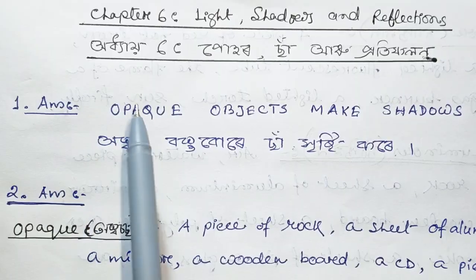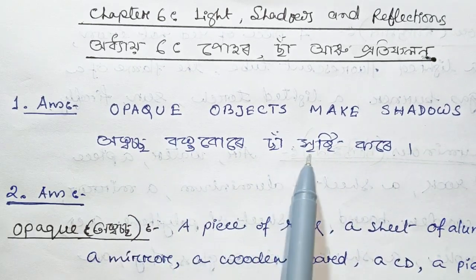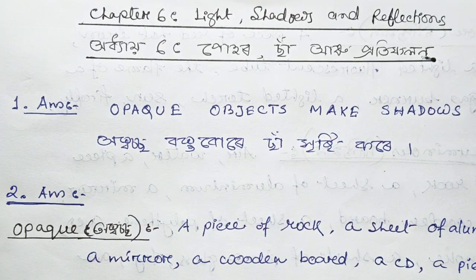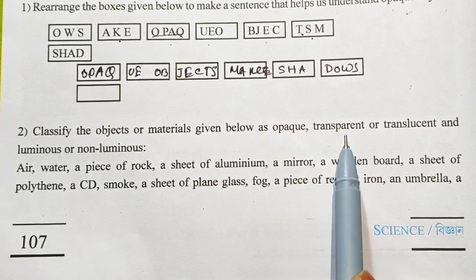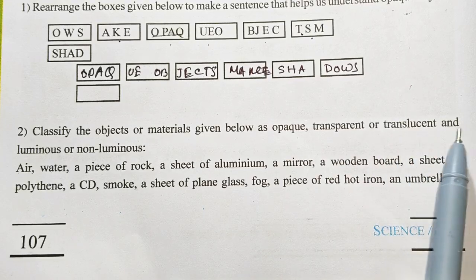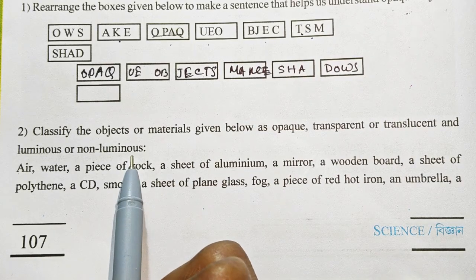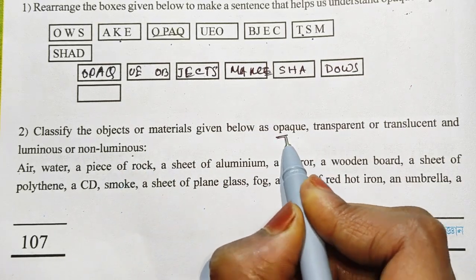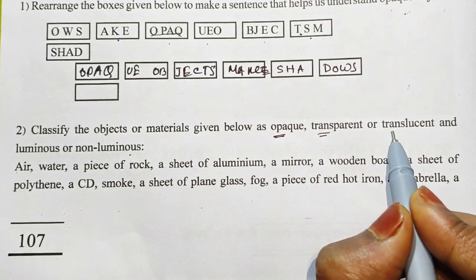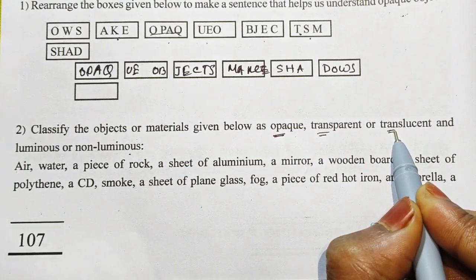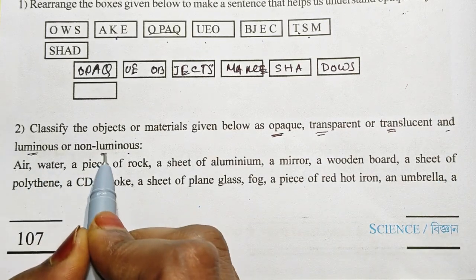Question number 2: Classify objects or materials given below as opaque, transparent, or translucent, and luminous and non-luminous.